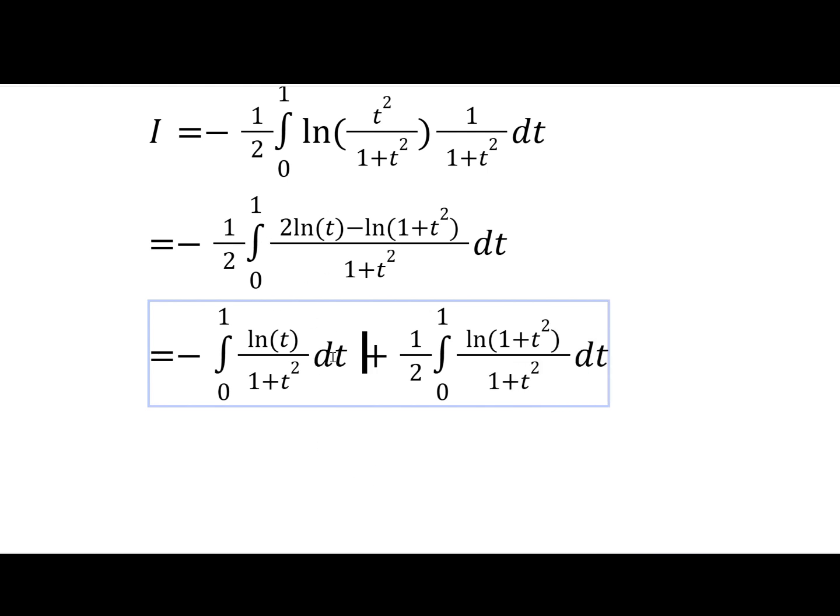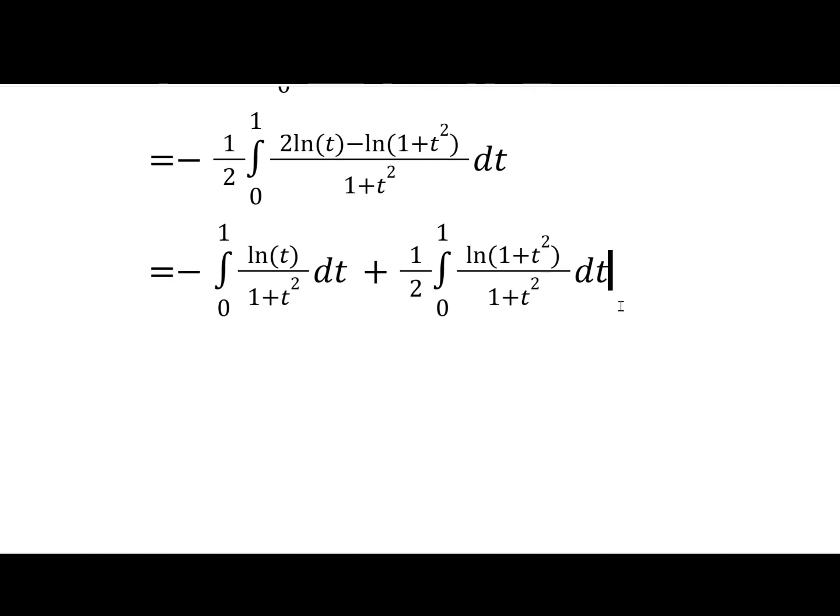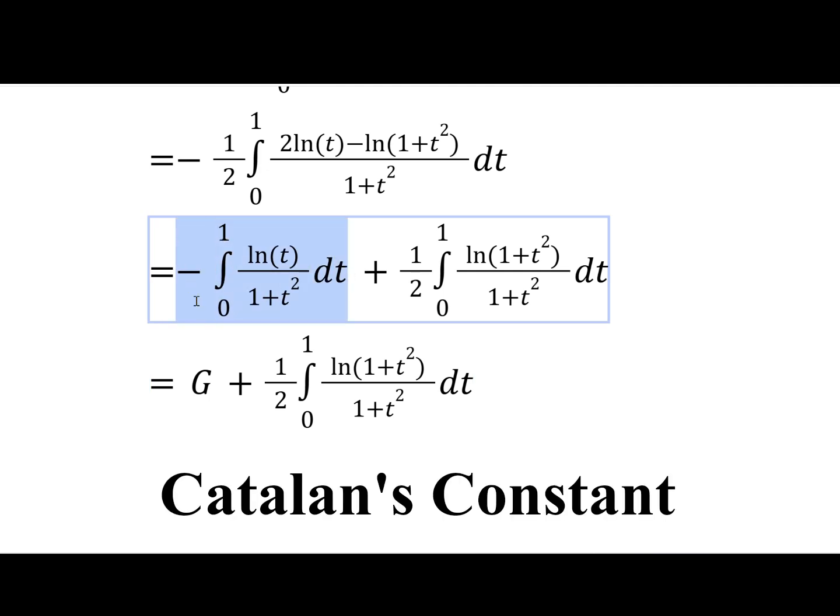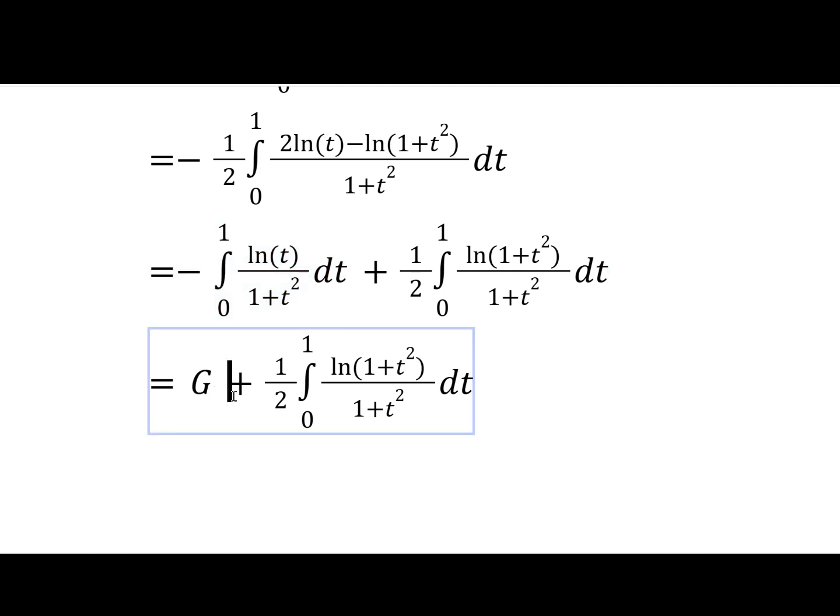Okay, now you might be a bit annoyed with me, because we're just going to quote the answer to this first integral. And the reason we can do that is because there's really no good way to show this. It's going to be equal to G. And what is G? G is Catalan's constant, which is approximately 0.91, I believe.